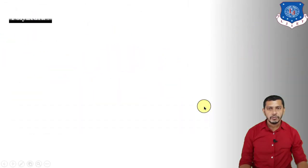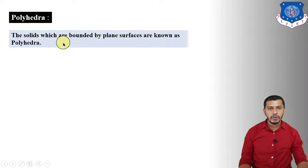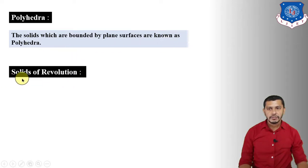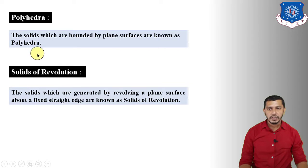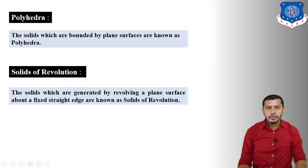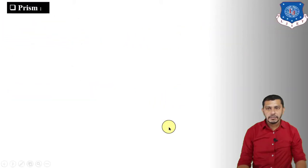Polyhedra are solids bounded by plane surfaces. Solids of revolution are solids generated by revolving a plane surface about a fixed straight edge. Prisms, pyramids, cube, and tetrahedron are polyhedra, whereas cone, cylinder, and sphere are the solids of revolution.